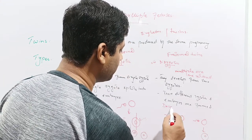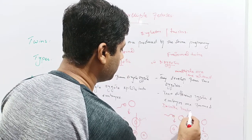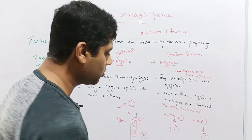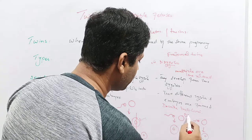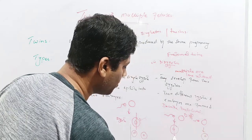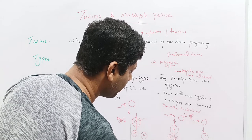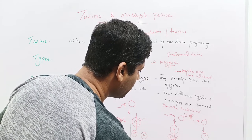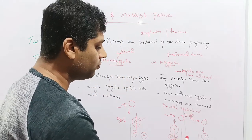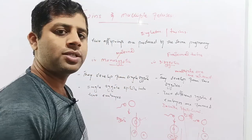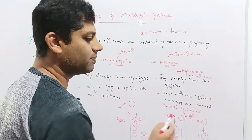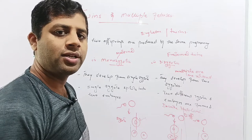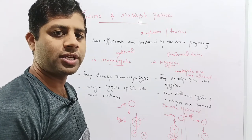So double fertilization occurs — two ova are released and fertilized by two different sperms. Both zygotes are different from each other. Each zygote will multiply by mitosis and give rise to an embryo, developing into two different fetuses. These two fetuses are different from each other because they were produced from two different ova fertilized by two different sperms. Such fetuses are called fraternal twins, which are non-identical and are different in shape, and sometimes also different in sex.